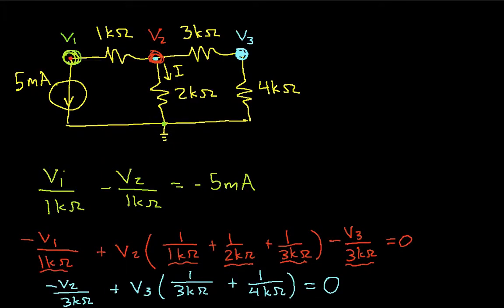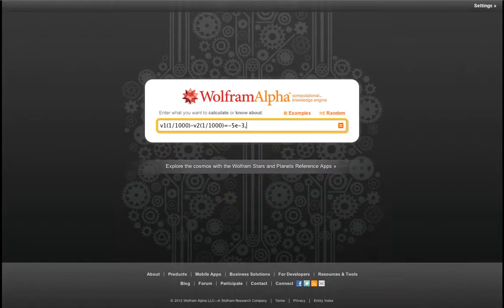Our second equation is going to be minus V1 over 1kΩ, then the V2 stuff over here, and the minus V3 over 3kΩ is equal to 0. So let's put that in. We now have negative V1 times 1 over 1,000, plus V2, 1 over 1,000, plus 1 over 2,000, plus 1 over 3,000, minus V3, which is 1 over 3,000. And it looks to me like I've already made a mistake. This should be 1,000, not 100. And this one is equal to 0.